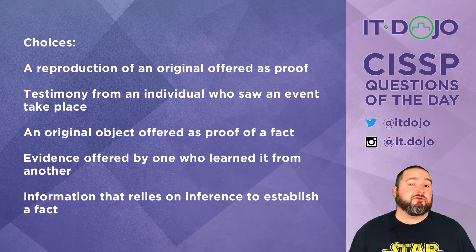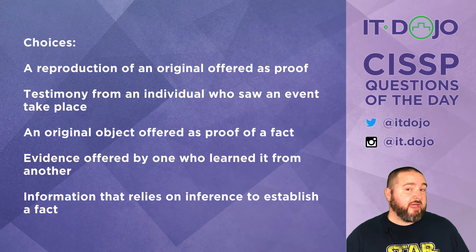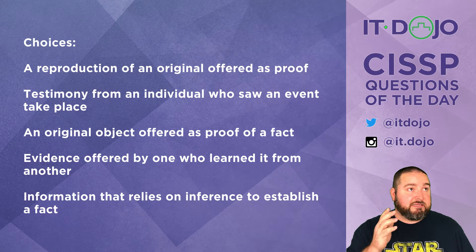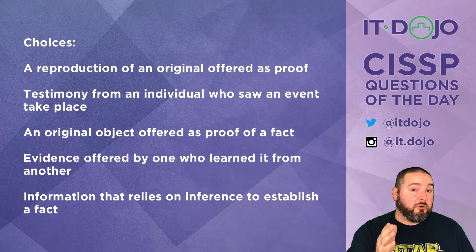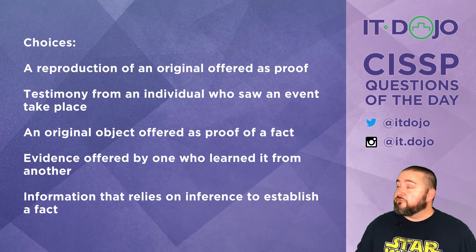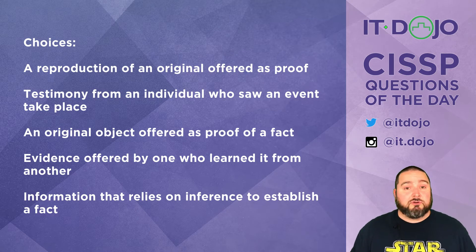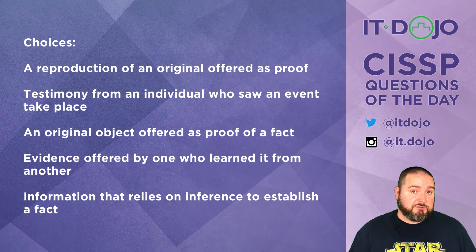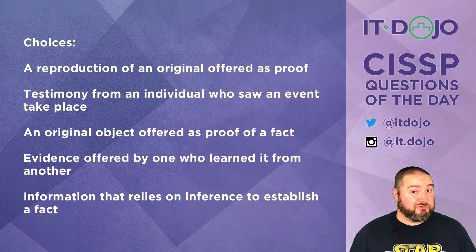The next item says it's an original object offered as proof of a fact — no, that is typically the definition of best evidence. The next item is evidence offered by someone who learned it from someone else — no, that would typically be called hearsay. So that's not what we're looking for.